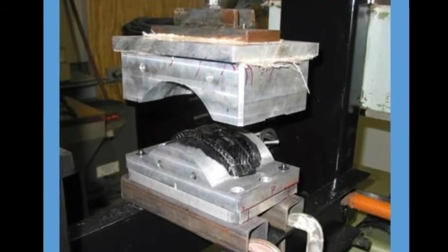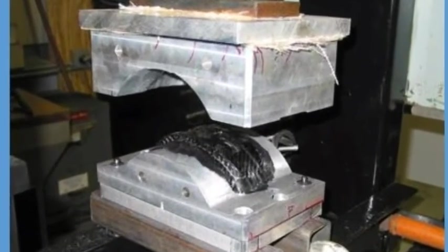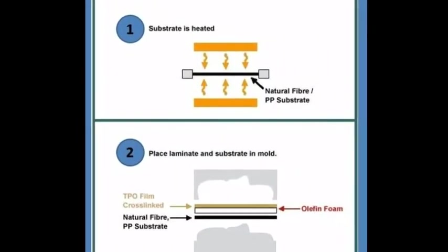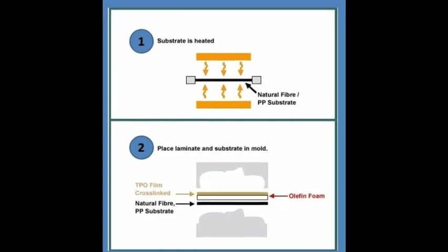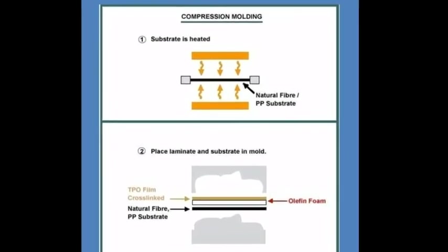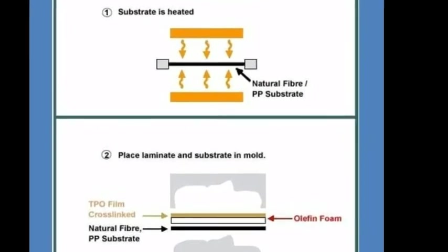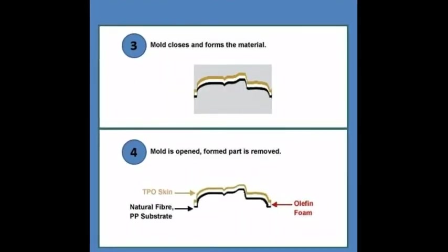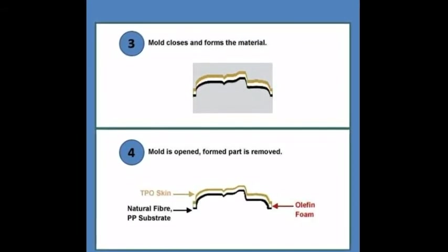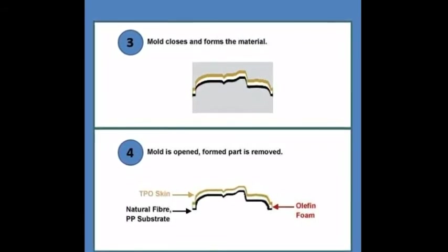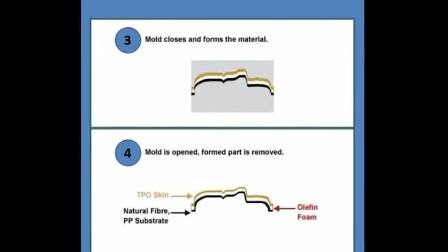In compression molding also you can see that the natural fiber or polypropylene material is heated. And in the next image you can see it laminates, and a substrate in mold. It is the TPO film cross-linked on it and the natural fiber and PP substrate and the two mold halves, one is fixed and the other one is movable.